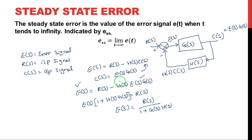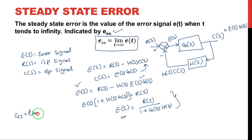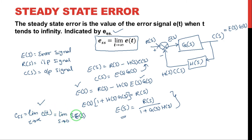Now what do you mean by steady-state error? The steady-state error is the value of the error signal E(t) when T is infinity. Steady-state error is indicated by E_ss. So E_ss is equal to limit T tends to infinity of E(t). But we have E(s) — I mean E(t) in terms of the Laplace domain. So there is another option. This can be written as limit S tends to 0 of S into E(s) in the S-domain.